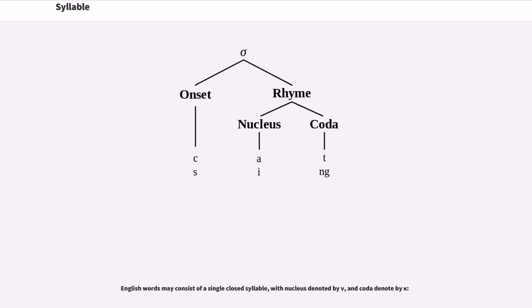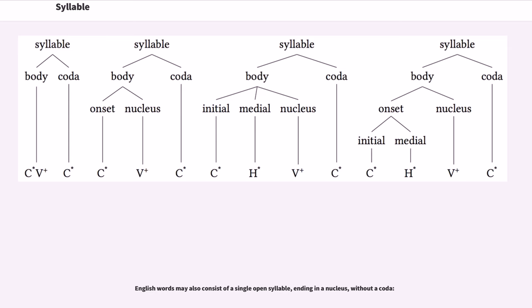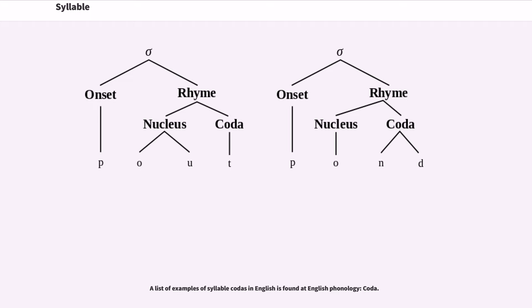English words may consist of a single closed syllable, with nucleus denoted by nu, and coda denoted by co. English words may also consist of a single open syllable, ending in a nucleus, without a coda. A list of examples of syllable codas in English is found at English Phonology, coda.